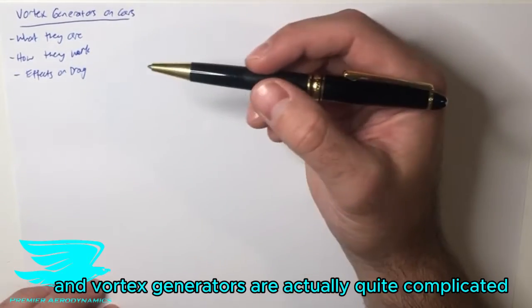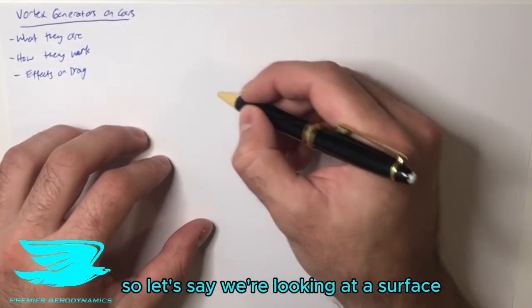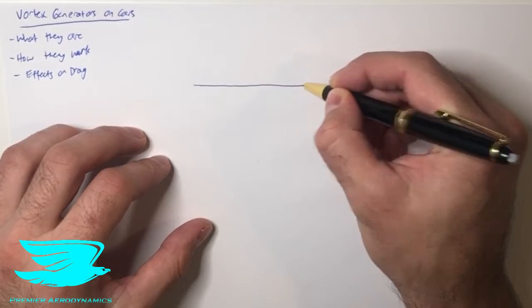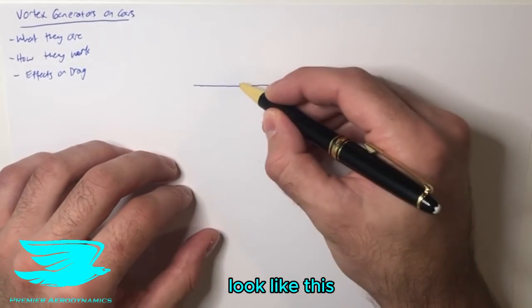Vortex generators are actually quite complicated, so let's talk about what they are to begin with. Let's say we're looking at a surface at the back of it, and the flow is coming out of the page at us, and they often look like this.